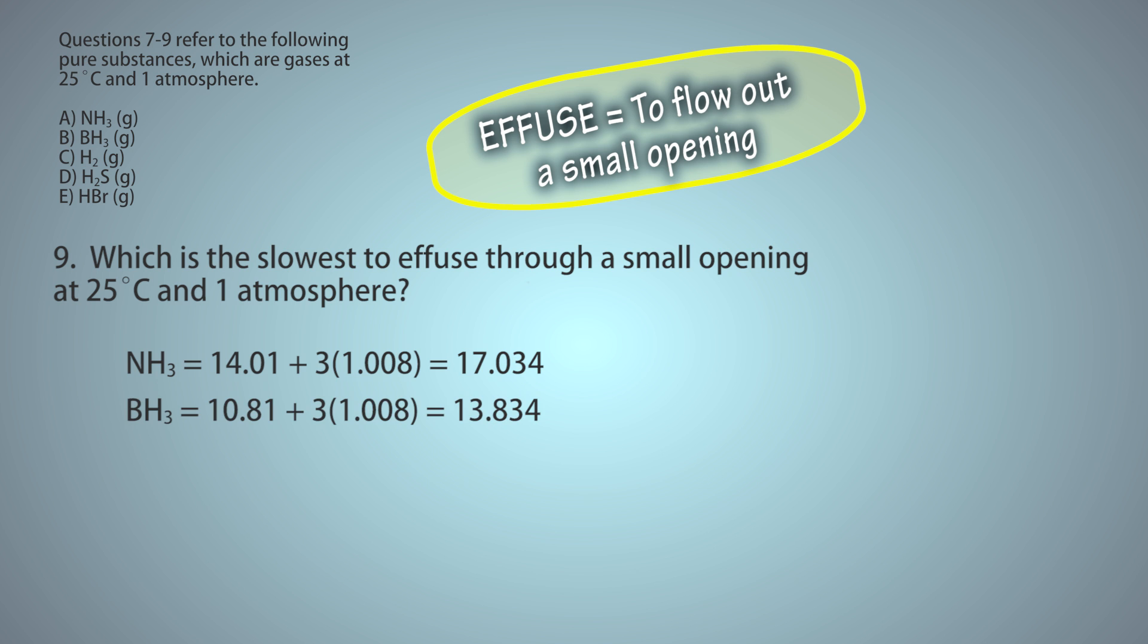BH3 equals 10.81 plus 3 times 1.008 equals 13.834. H2 equals 2 times 1.008 equals 2.016.